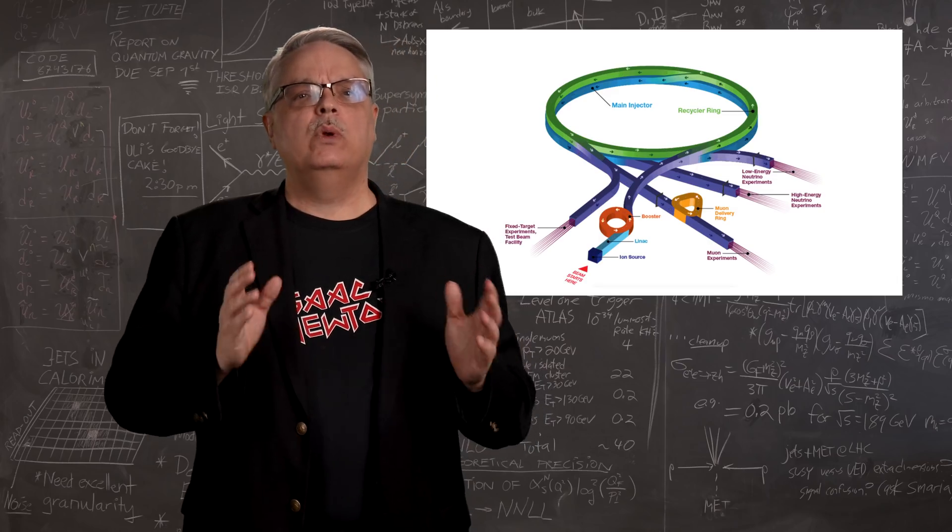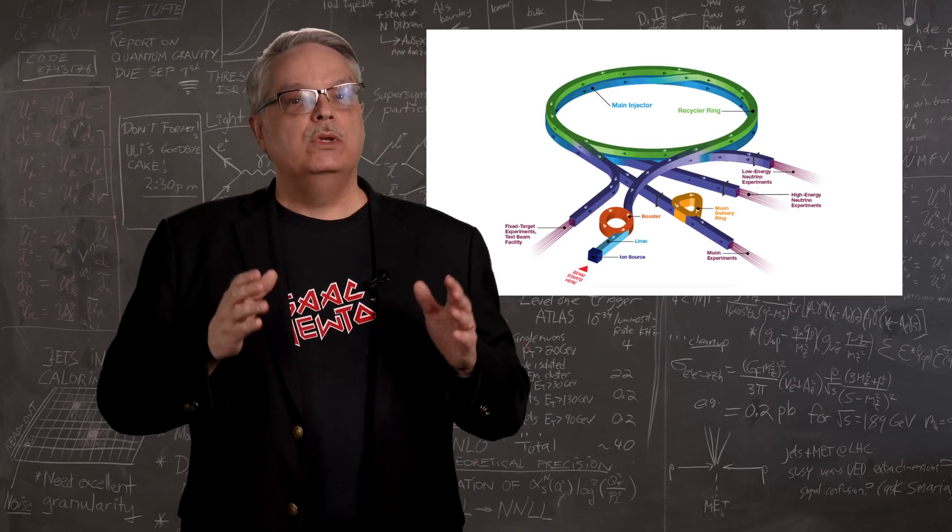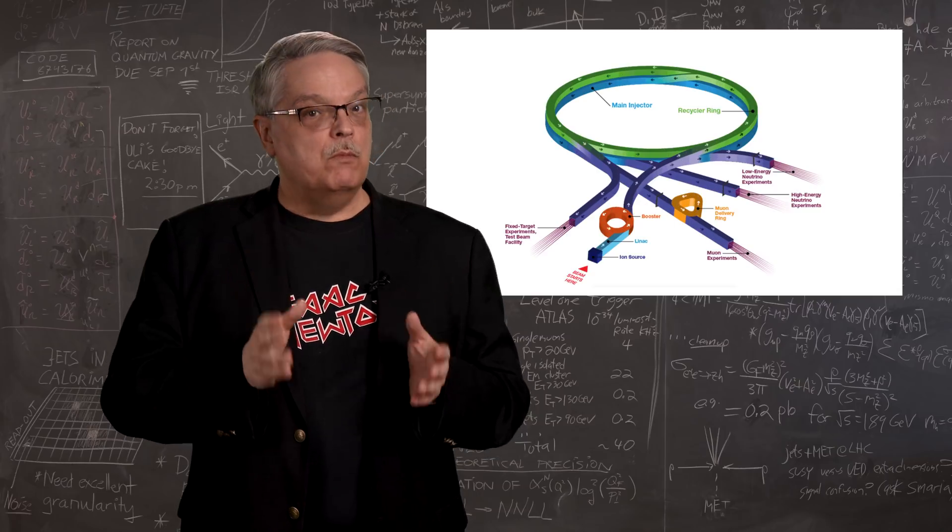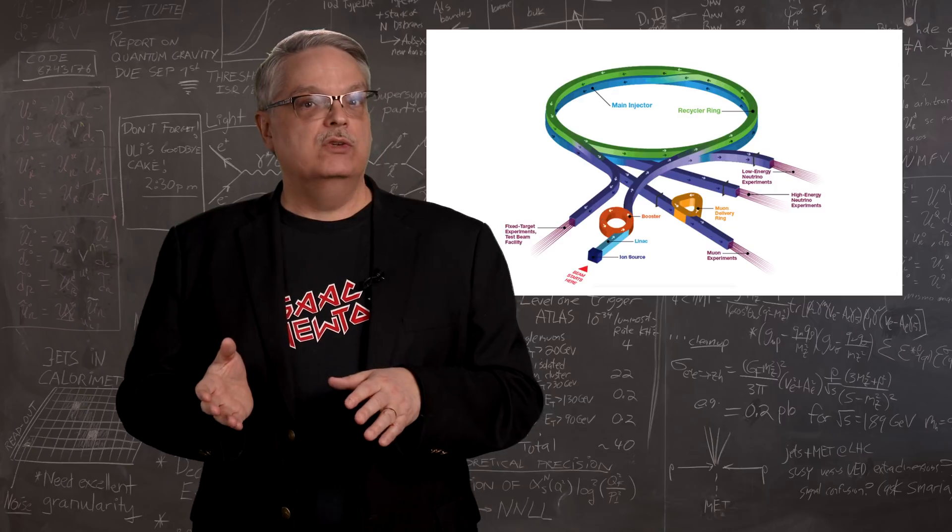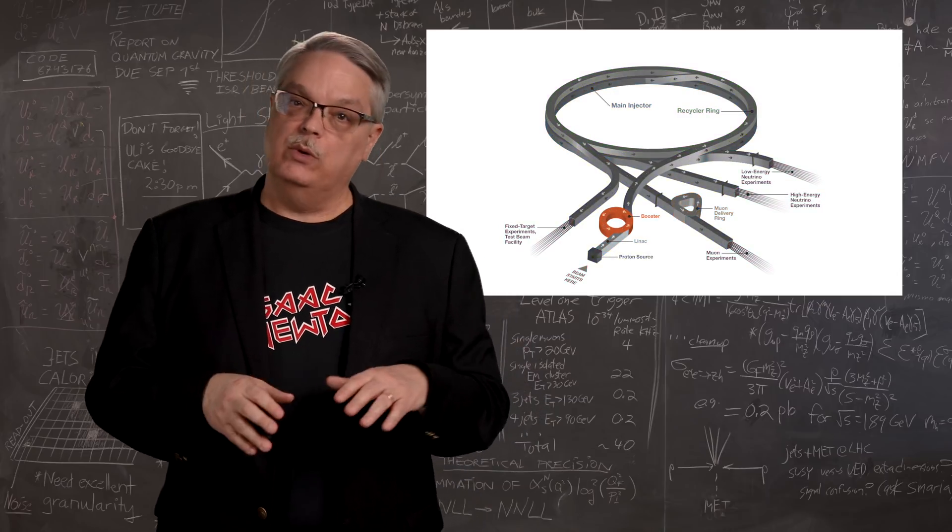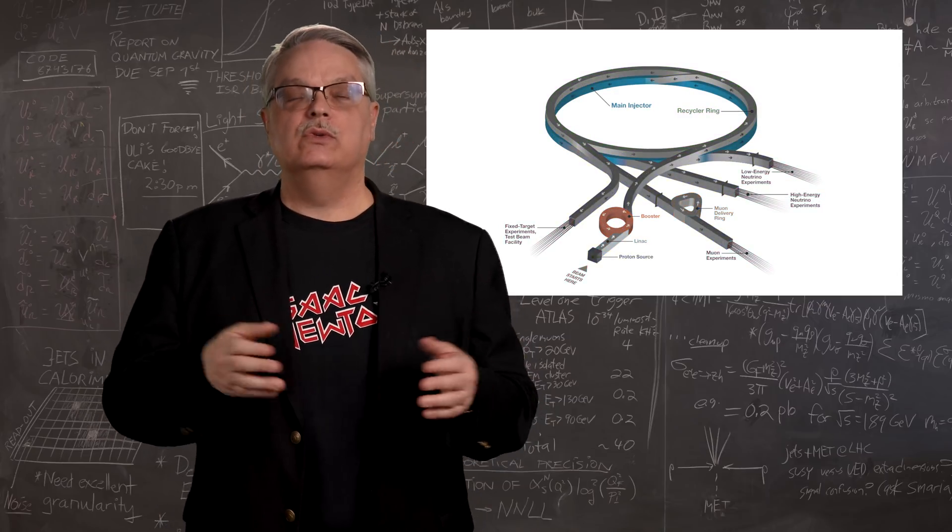Depending on the energy we want the neutrinos to have, we use electric and magnetic fields to remove the protons from one of the accelerators. If we want low energy neutrinos, we use the booster, and if we want high energy ones, we use the main injector.